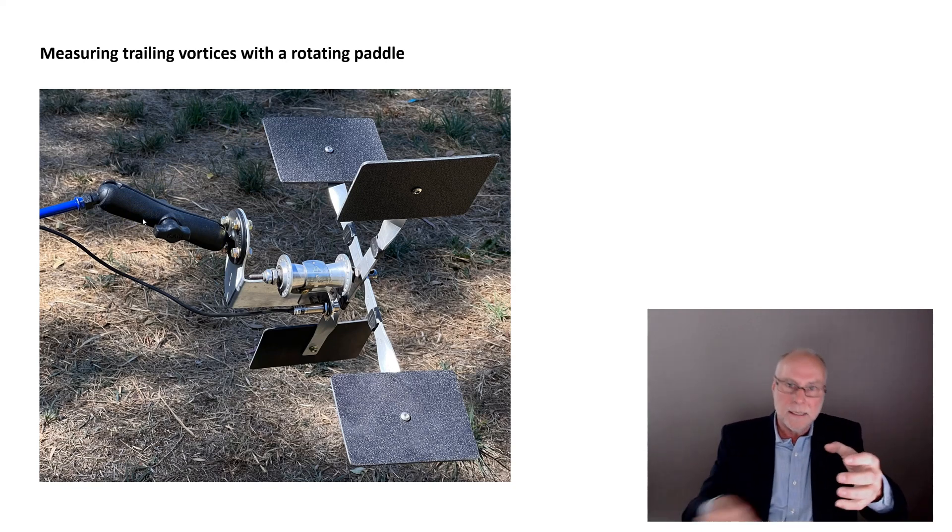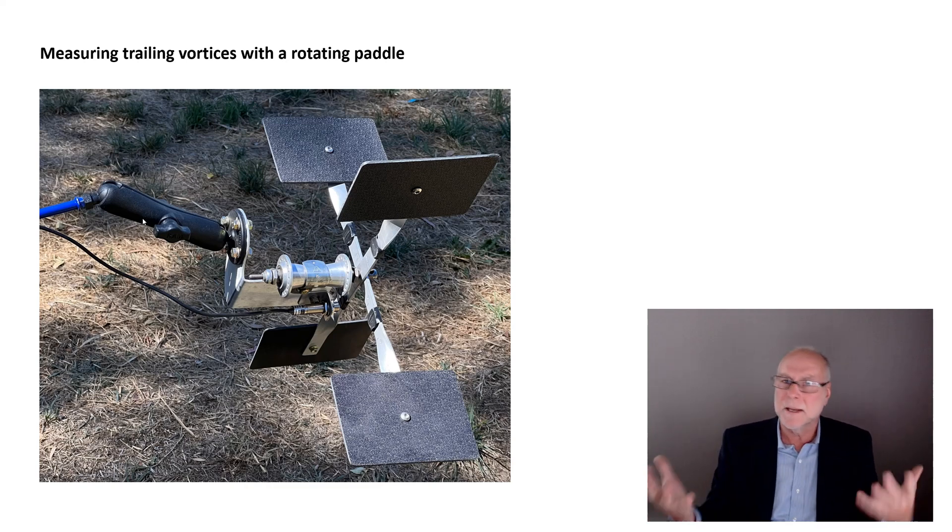So we have this thing mounted with a longitudinal axis lengthways behind the car, and we move it around, and we can see the direction of rotation of the vortex, and by looking at the tachometer or just visually looking at it in the mirror, we can see the speed of rotation. You might say, why does the speed matter?